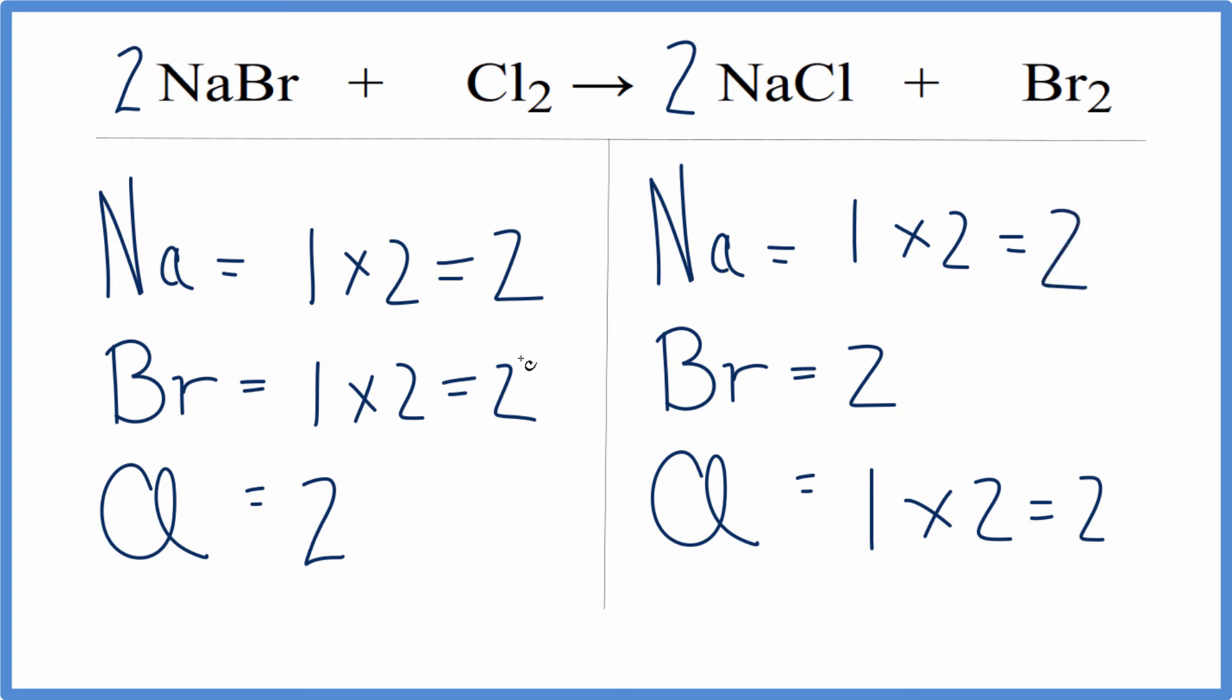And at this point, we have the same number of each type of atom on each side of the equation. That means this equation is balanced. This is Dr. B with the balanced equation for NaBr plus Cl₂ yields NaCl plus Br₂.